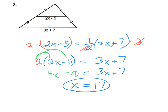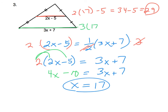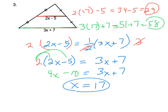Let's double check. The mid-segment length would be 2 times 17 minus 5, giving me 34 minus 5, which is 29. The length of the third side would be 3 times 17 plus 7, giving me 51 plus 7, which is 58. And indeed, 58 divided by 2 is 29, so I've got that relationship. That's just me checking my work, but it's probably worth your time to make sure everything is good.